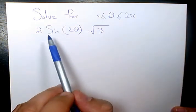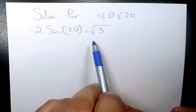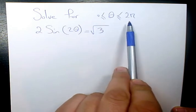I want to show you how to solve this trigonometric equation, which is 2 sine 2 theta equals to root 3 and the theta must be between 0 and 2 pi.